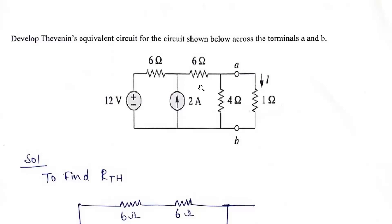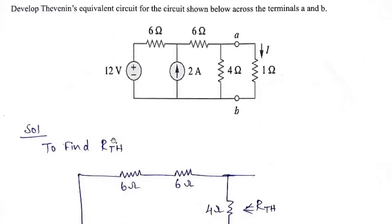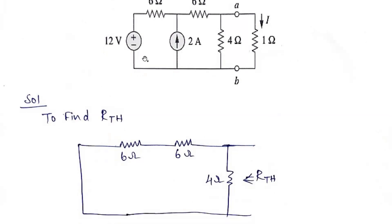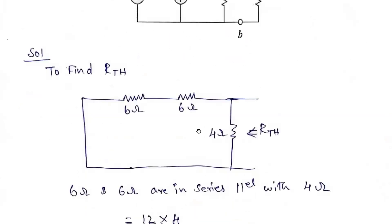First step: we need to find out R_th. For finding R_th, first we need to open circuit the load resistance. Voltage sources we need to short circuit, and current sources we need to open circuit. So the current source here we need to open circuit, and the voltage source we need to short. The circuit is now modified — voltage sources are shorted and the current source is open circuited. From here we find R_th.